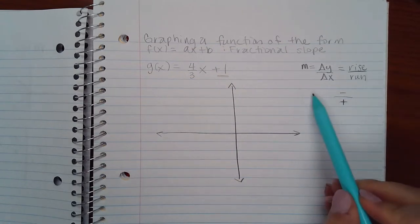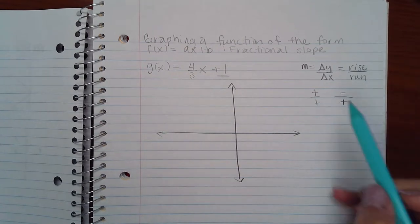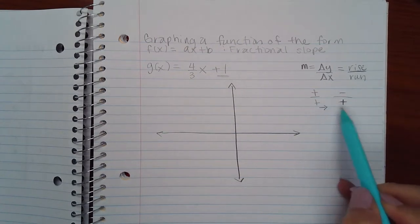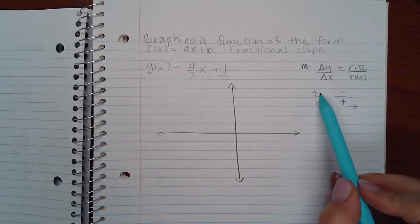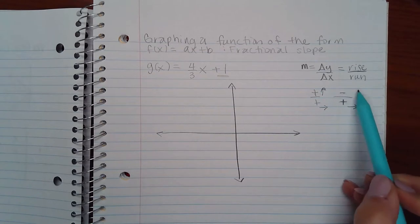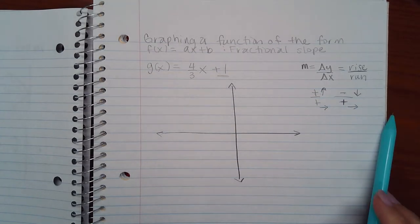Whereas if it's a positive fraction, then both are positive. This means that you will always run to the right, always run forward. However, when it comes to the rise, if it's positive you actually go up, and if it's negative you'll go down. But always go to the right.